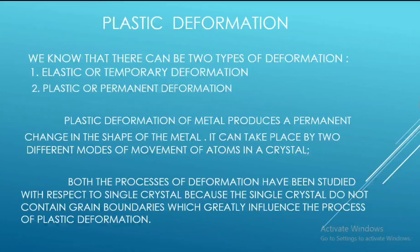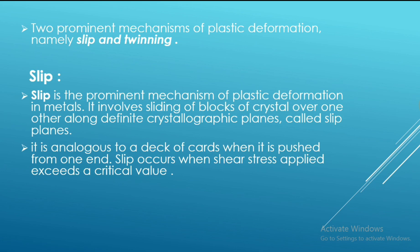Plastic deformation produces a permanent change in the shape of a metal. There are two types of deformation: elastic or temporary deformation, and plastic or permanent deformation. Both processes have been studied with respect to single crystals, because single crystals do not contain grain boundaries, which greatly influence the process of plastic deformation. There are two prominent mechanisms of plastic deformation: slip and twinning.